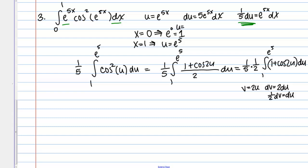And then we need to transform the bounds, so u equals 1, it's going to give me v equals 2, right, because v equals 2 times u. And then u equals e to the 5, it's just going to give me v equals 2e to the 5.